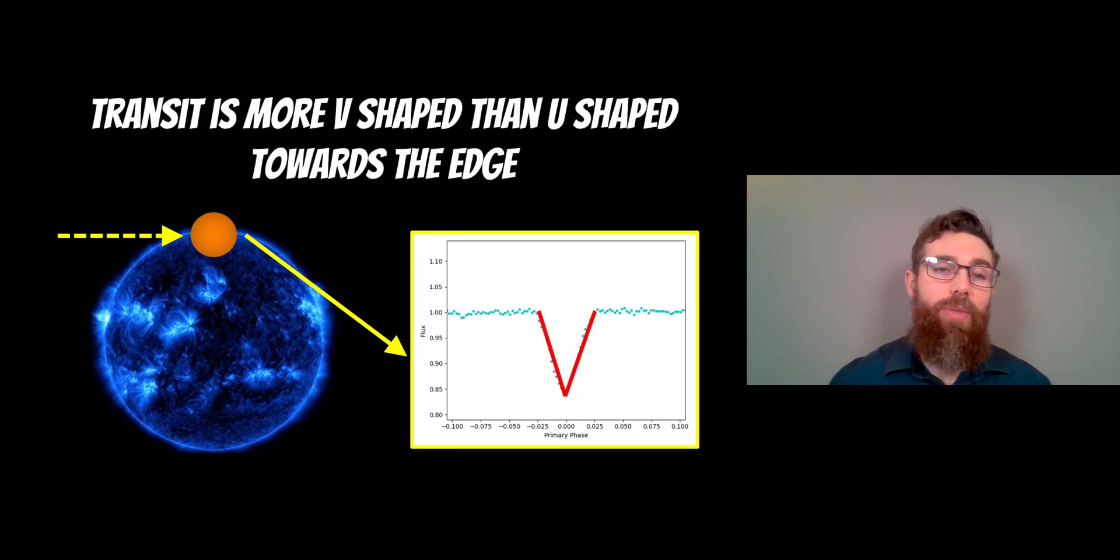It's also more v-shaped. Now the reason for that is as it's towards the edge, the planet only just passes across to the star and then back out again straight away. So with the one that's going across the middle, because it's passing across a larger part of the star, you get a bit of a flatter bottom. So you basically get the ingress and the egress, but between that it's passing across more of the star, so you get a flatter bottom which creates the u. So the shape is distinctly different between the edge and the middle.